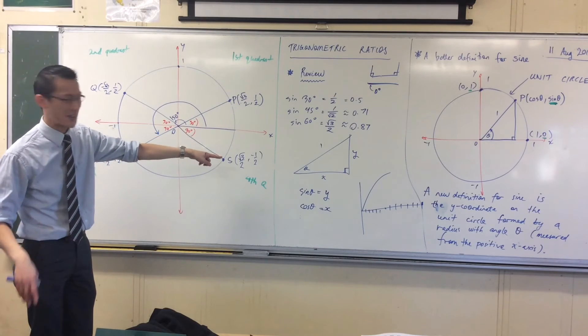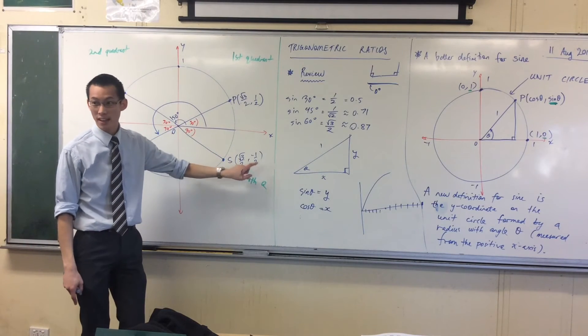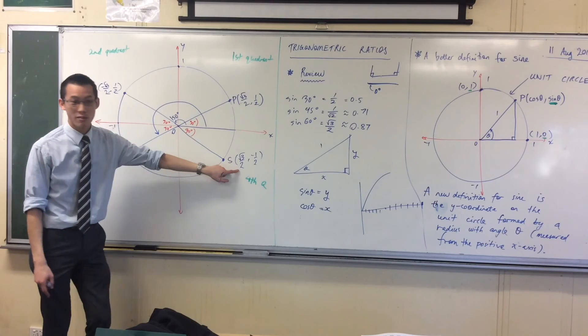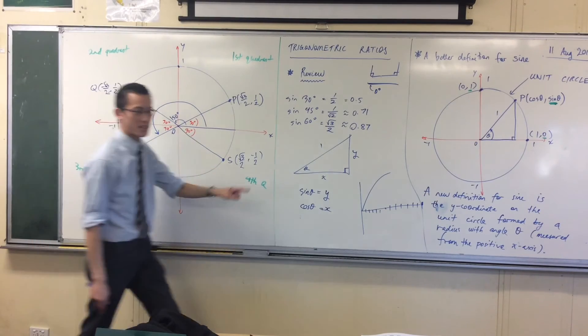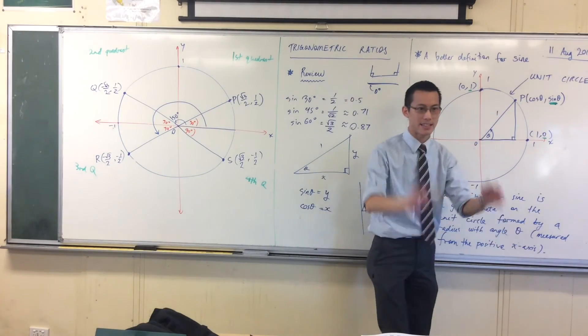Now you can know. You don't need to reach for your calculator. Sine 330, it's going to be this. Cos 330, it's going to be this. That's what sine is. That's our new definition.